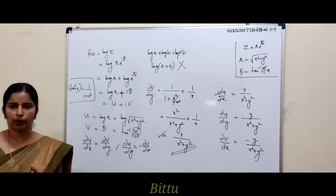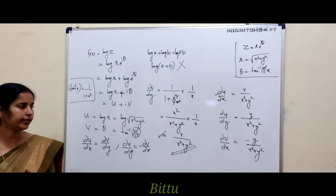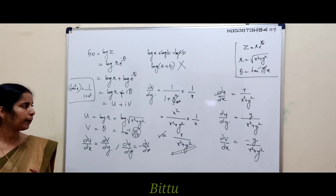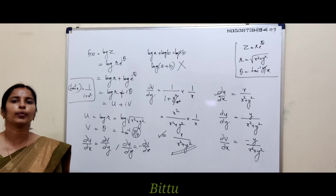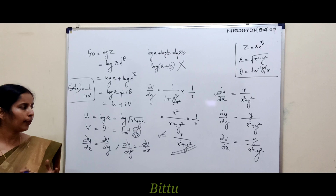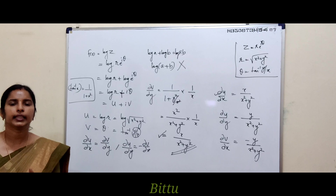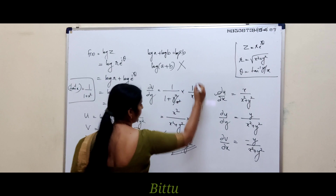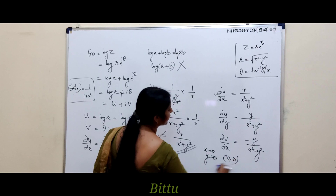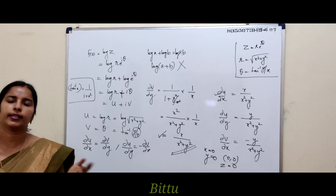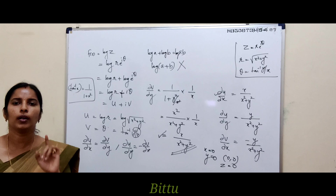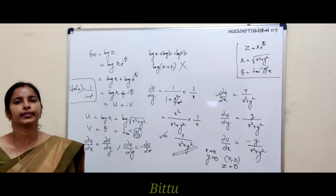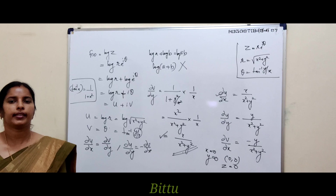Similar to the previous problem, the CR equations are satisfied everywhere. However, all partial derivatives have denominator x² + y², which is zero when x = 0 and y = 0. Division by zero is not allowed, so the partial derivatives are not continuous at (0, 0). Therefore, log z is not analytic at the origin, but at all other points it is analytic.